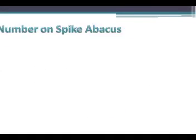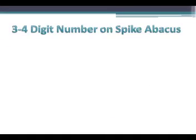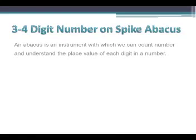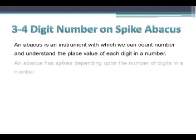Moving on to the next topic: 3 and 4 digit numbers on a spike abacus. An abacus is an instrument with which we can count numbers and understand the place value of each digit. An abacus has spikes, and the number of spikes depends on the number of digits a number has.